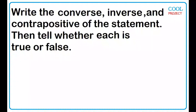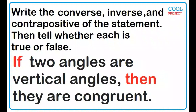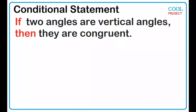Write the converse, inverse, and contrapositive of the statement, then tell whether each is true or false. If two angles are vertical angles, then they are congruent. Is this statement true or false? True.